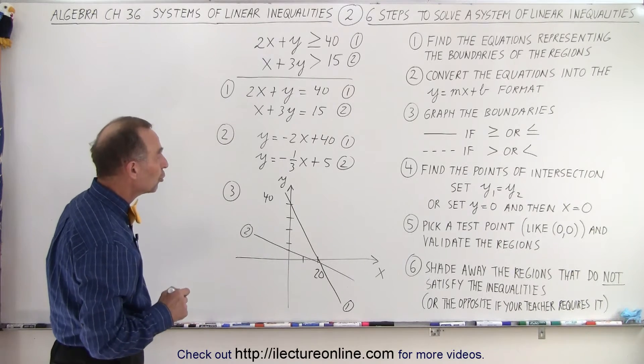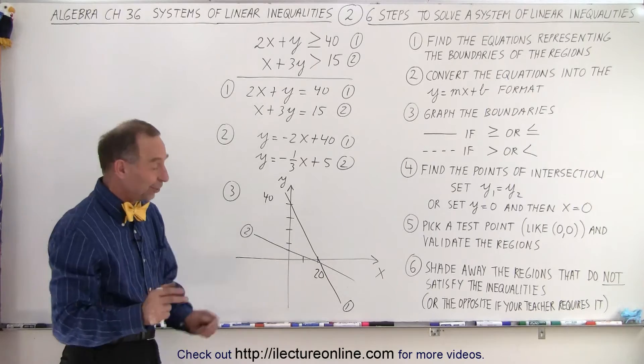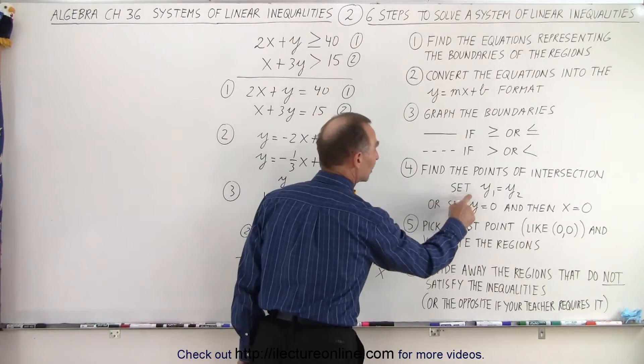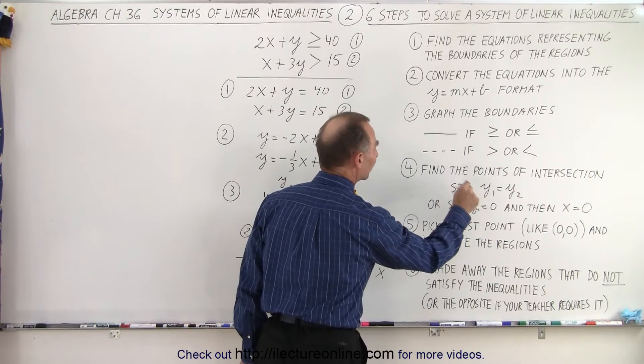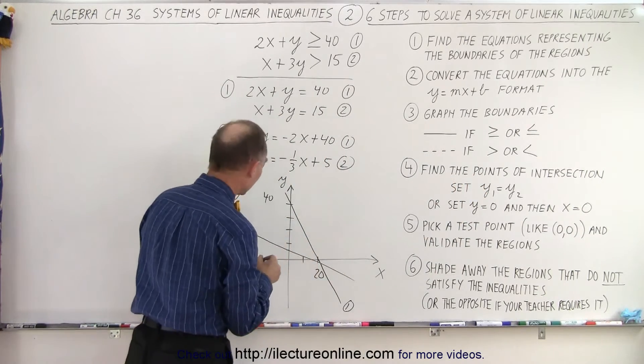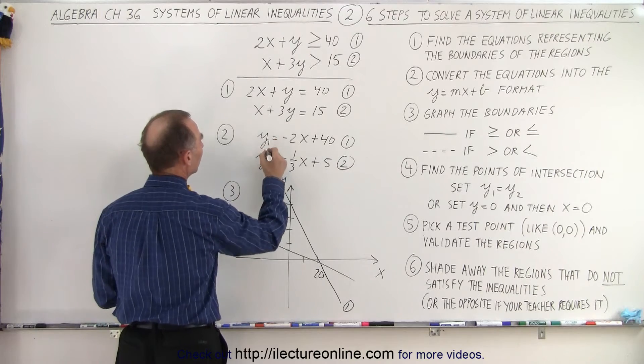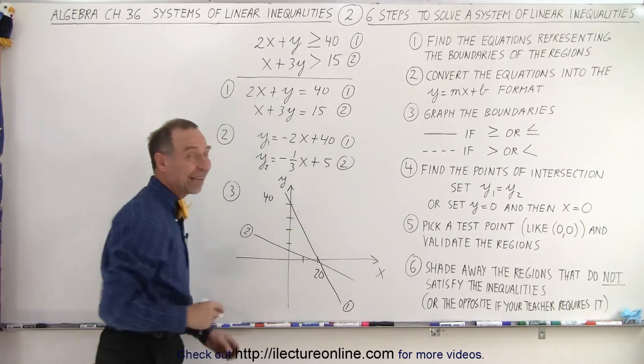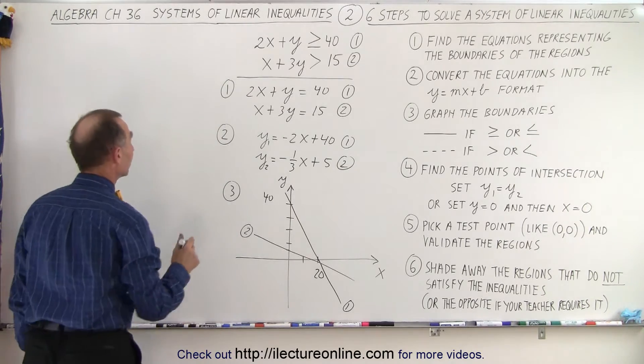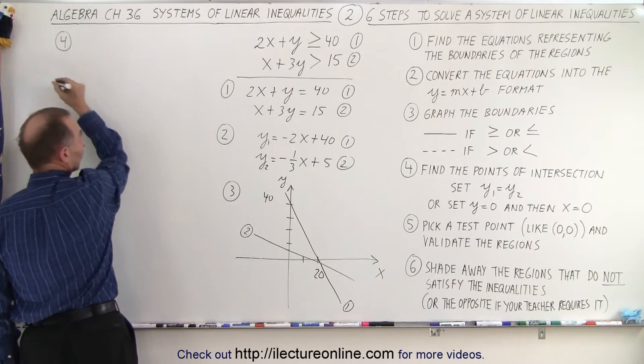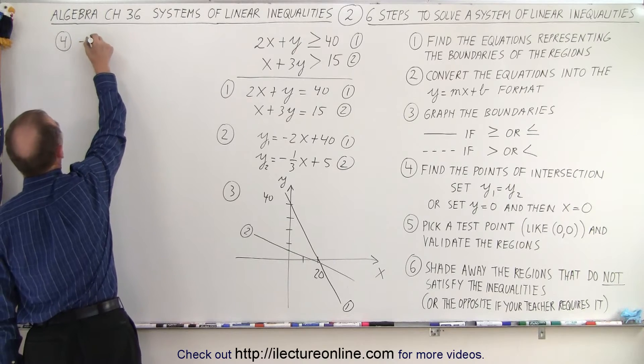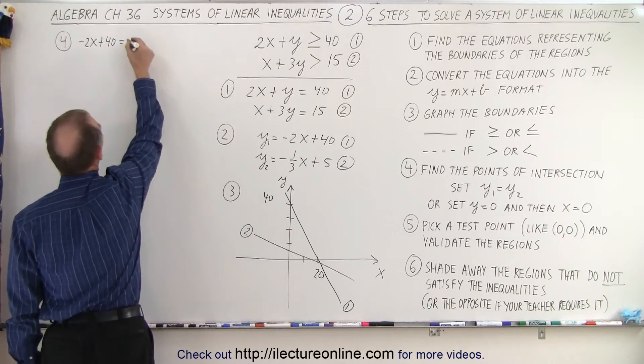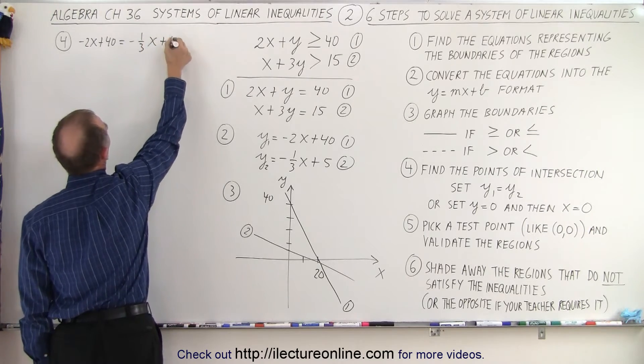So next, what we should do, of course, I'm assuming that I do this correctly. I don't know if I did or not. Now we're going to find the points of intersection. And we do that by setting y of the first equation equal to y of the second equation. So this is y1, so to speak, and this is y2. So when we set those equal to each other, we set the right sides of the two equations equal to each other. So step number four, we're going to write that minus 2x plus 40 is equal to minus 1 third x plus 5.